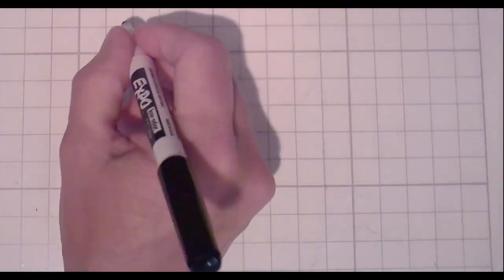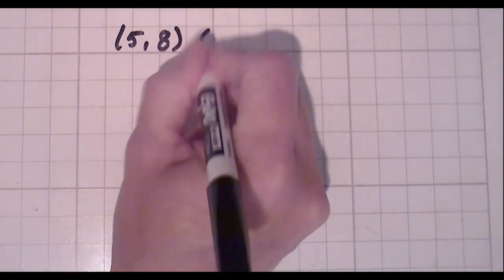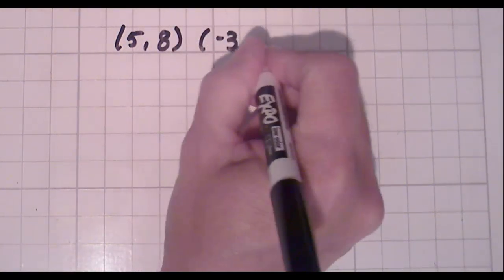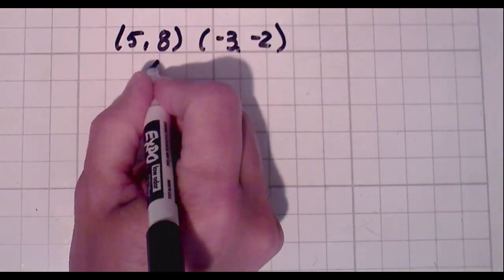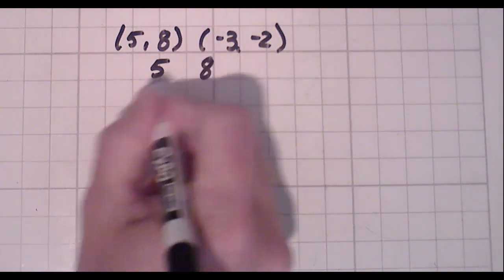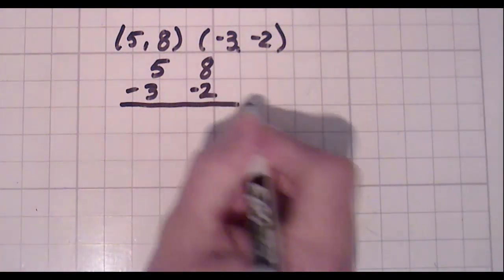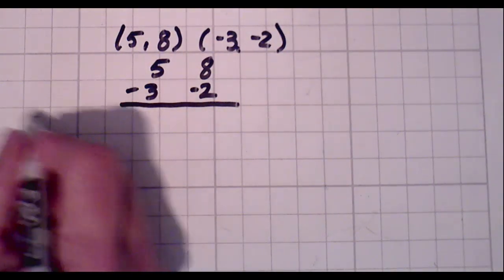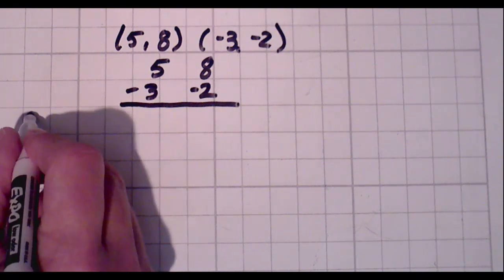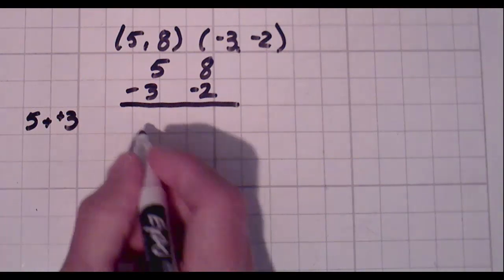Let's do a couple more negatives. So let's get complicated a little bit. So we have 5, 8 and negative 3, negative 2. Again, it doesn't matter what we put on top. 5, 8, negative 3, negative 2. 5 minus negative 3. And write it off to the side if you need to. 5 minus negative 3. Oh, look at that. What is that? That's 5 plus 3. That's an 8.